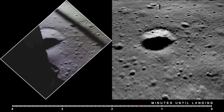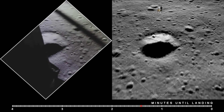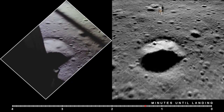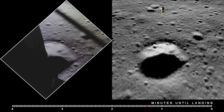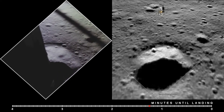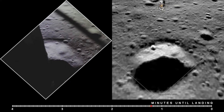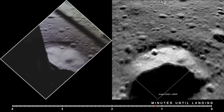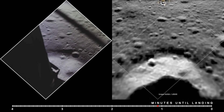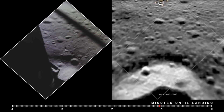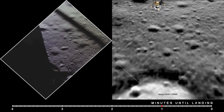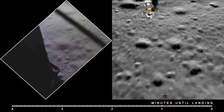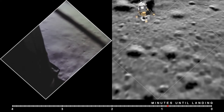Altitude, velocity, light. 3 and a half down. 220 feet. 15 forward. 11 forward. Coming down nicely. 200 feet. 4 and a half down. 5 and a half down. Within 60. 6 and a half down. 5 and a half down. 9 forward. Good. 20 feet. 100 feet. 3 and a half down. 9 forward. 5 percent.